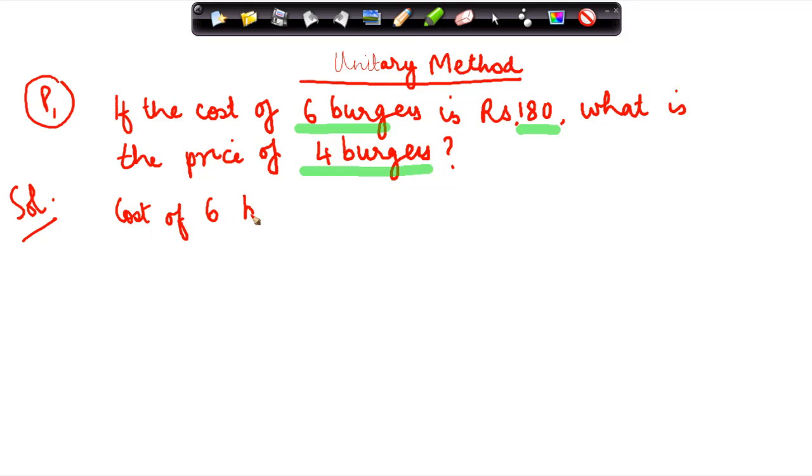Cost of six burgers is equal to 180. Therefore, cost of one burger is equal to 180 by six.